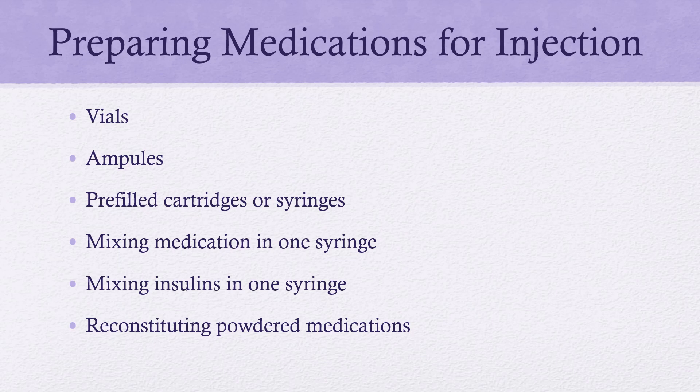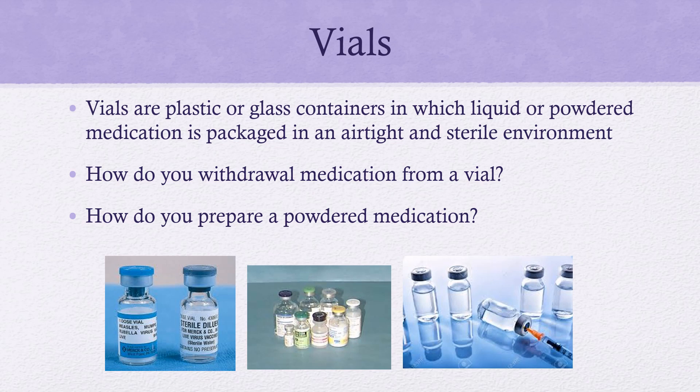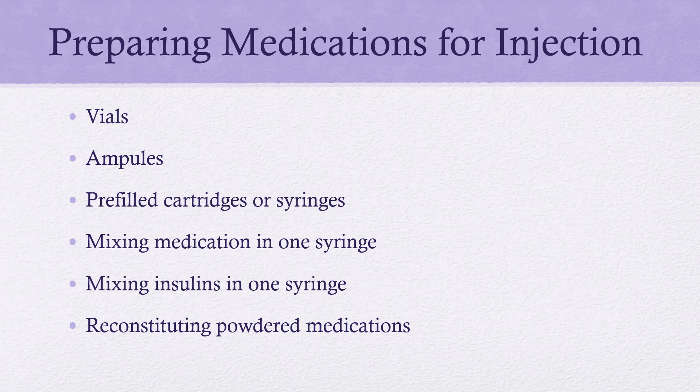How do we prepare medications for injection? We can prepare injections from a vial — a plastic or glass container with a rubber stopper, typically single or multi-dose. We can draw medications from ampoules, which are single-use — you snap off the top and use a filter needle to draw up the medication. We also have pre-filled cartridges or syringes, can mix medications into one syringe, mix insulin, and reconstitute powdered medications by adding the reconstitution fluid.